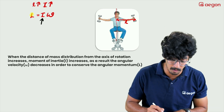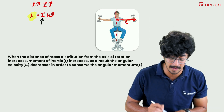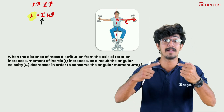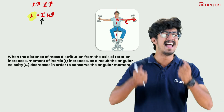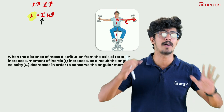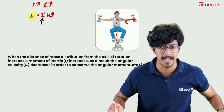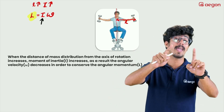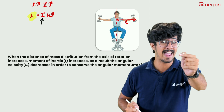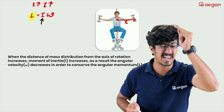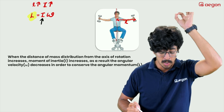Angular momentum is conserved because it doesn't act like an external torque. So, if there is no external torque acting, the angular momentum will be conserved.